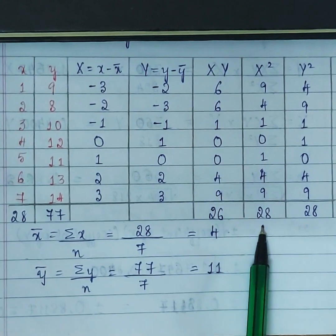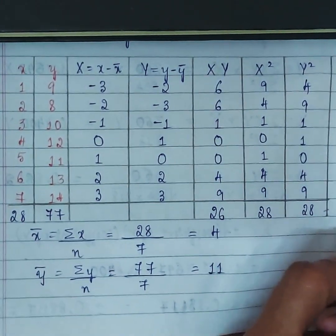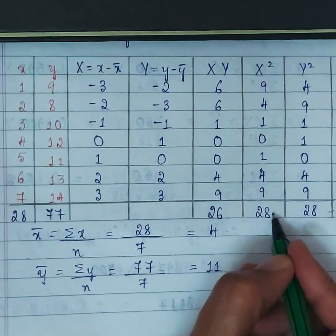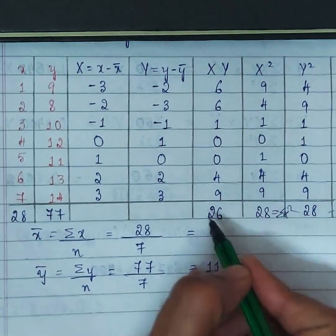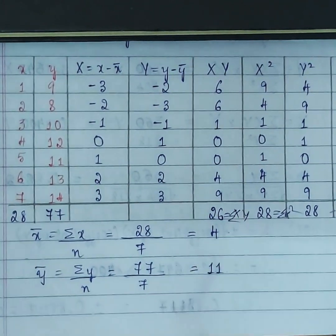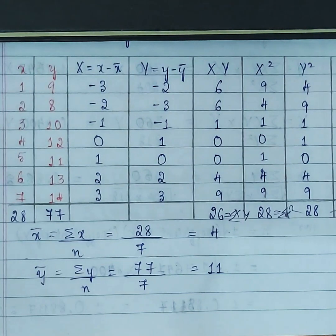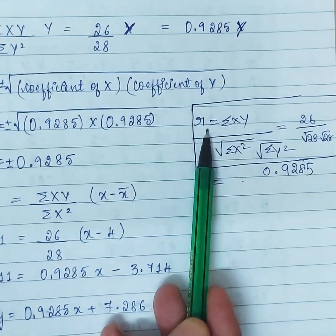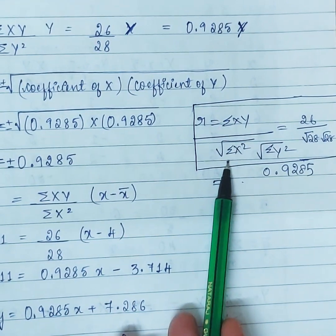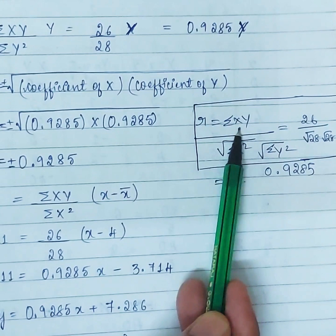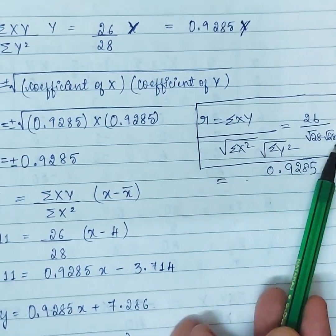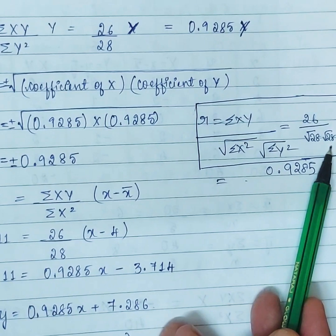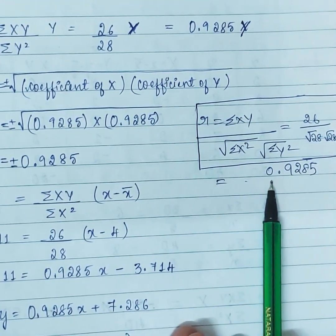Now we add all the values — these are the summations: ΣXY, ΣX², and ΣY². Apply the formula: r = ΣXY / √(ΣX² × ΣY²). Here, ΣXY = 26, ΣX² = 28, ΣY² = 28. So r = 26 / √(28 × 28) = 26 / 28.